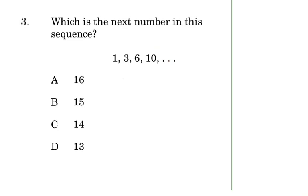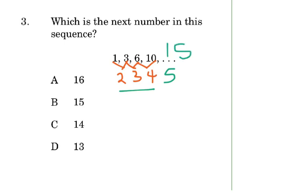Which is the next number in this sequence? Look at the relationship. We are going to subtract the second from the first: 3 minus 1 gives us 2, 6 minus 3 gives us 3, 10 minus 6 gives us 4. We realize what's happening — it is increasing by 1, so the next difference would be 5. So 1 plus 2 gives us 3, 3 plus 3 gives us 6, 4 plus 6 gives us 10, and 5 plus 10 gives us 15. So B is our answer.